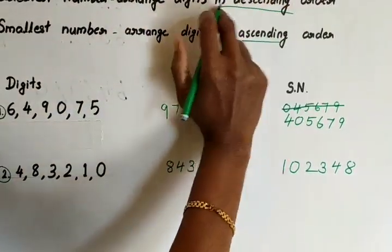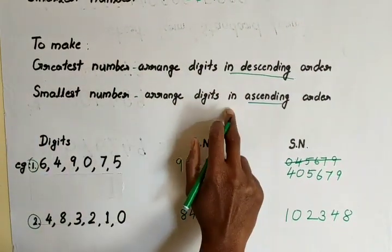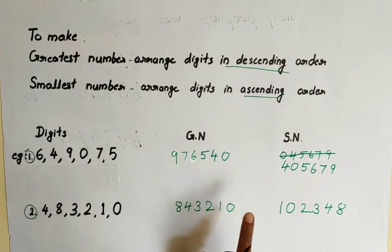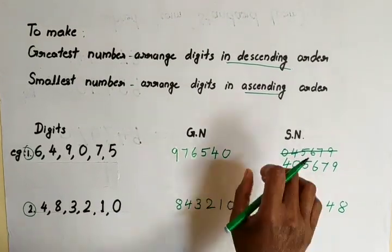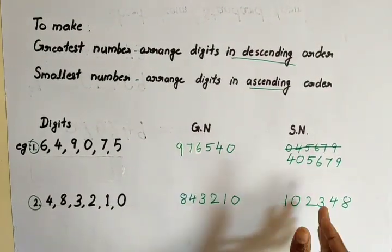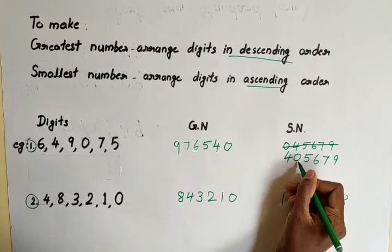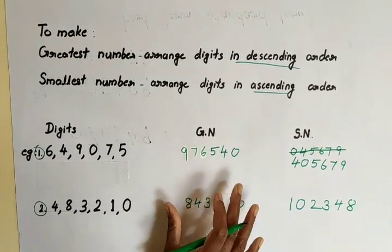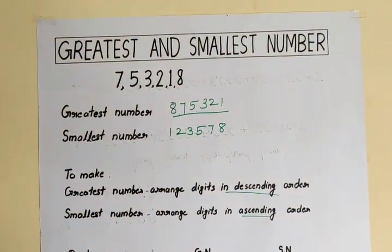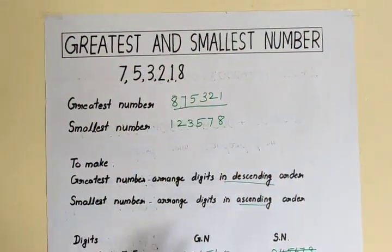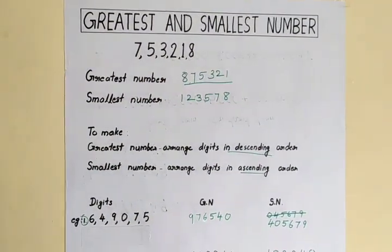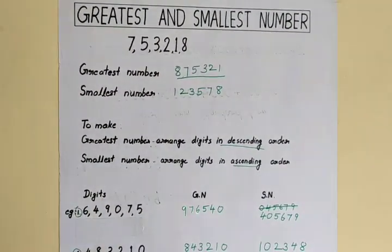So, to summarize: for the greatest number, arrange in descending order. For the smallest number, arrange in ascending order. If 0 is there, there is one exception — leave 0, find the next smallest, then write 0 secondly. This is how to write the greatest and smallest number. I hope you have got an idea. Thank you for watching. Stay warm, keep learning.